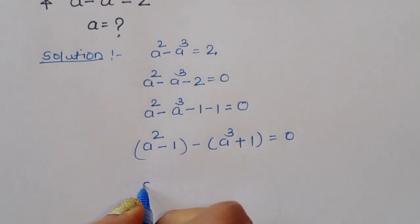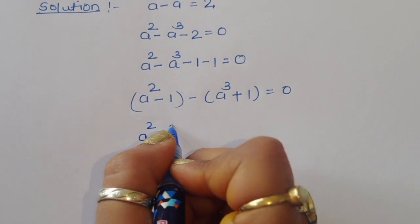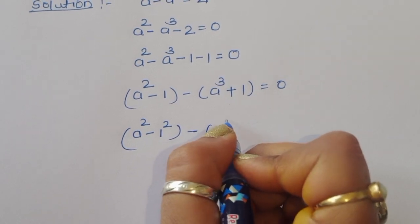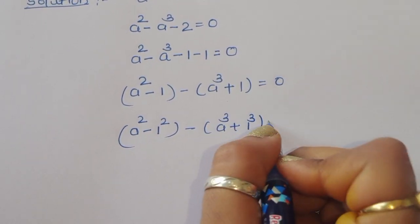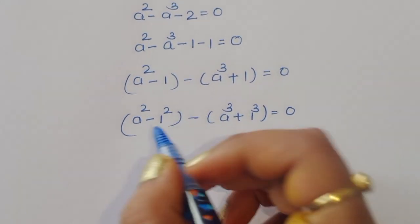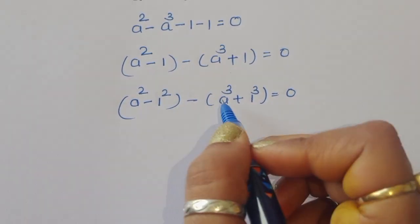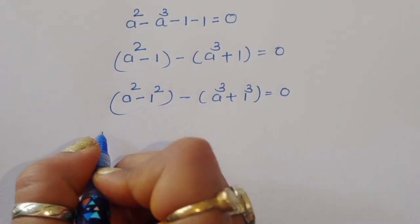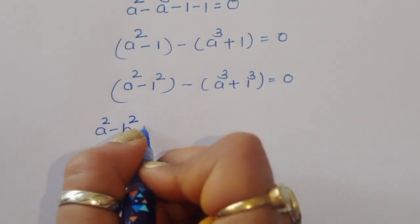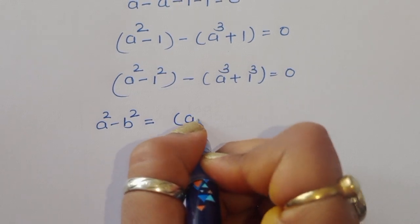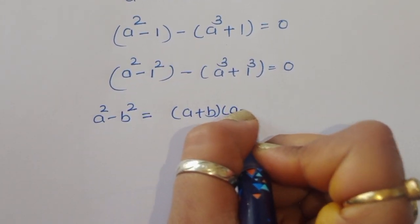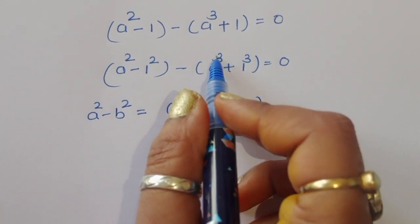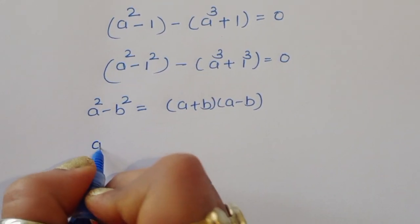Now a squared minus 1 squared — since 1 squared equals 1 — and here minus a cubed plus 1 cubed is equal to 0. This is the form of a squared minus b squared, and this is the form of a cubed plus b cubed. So first we take the formula for a squared minus b squared.